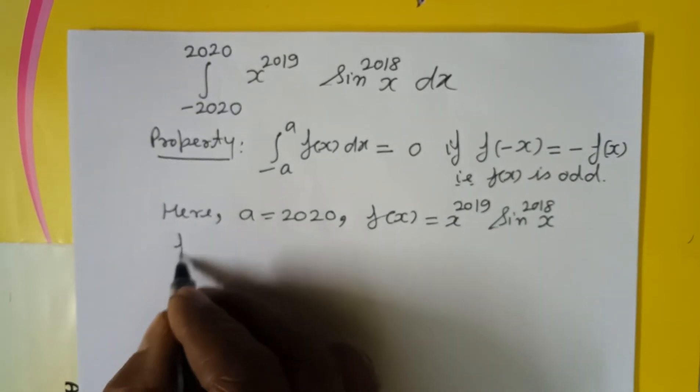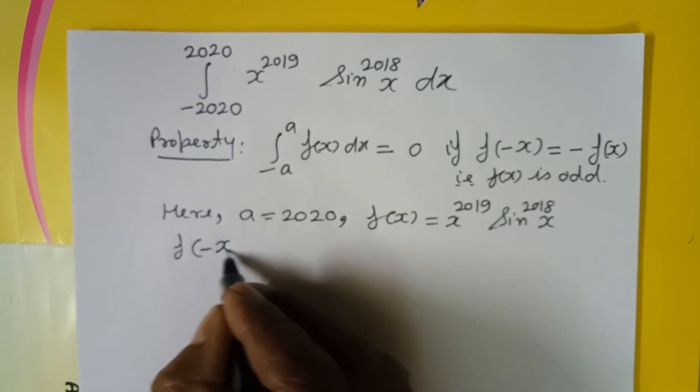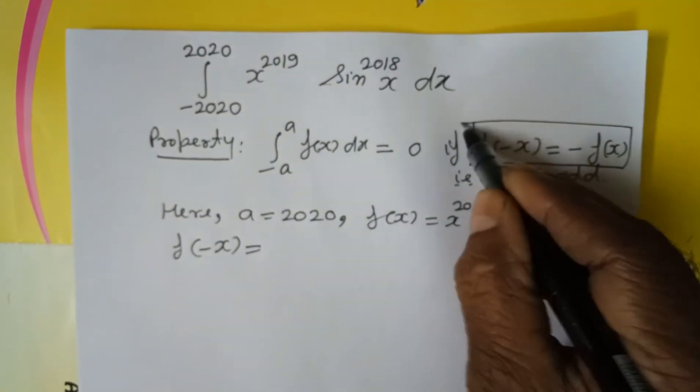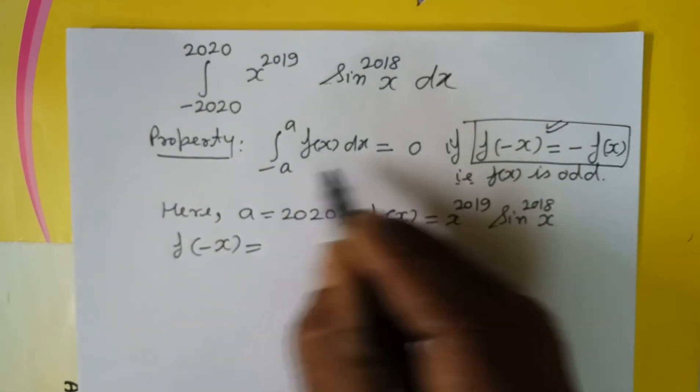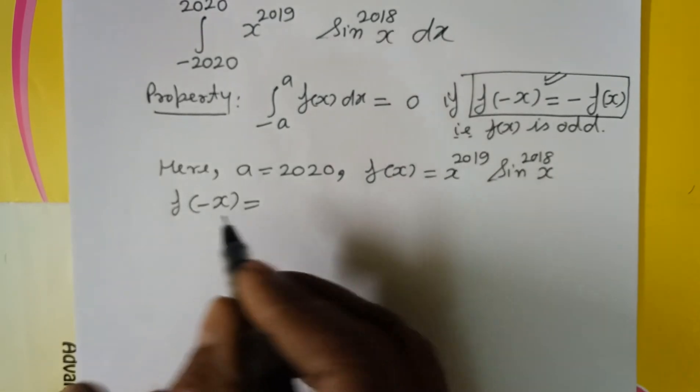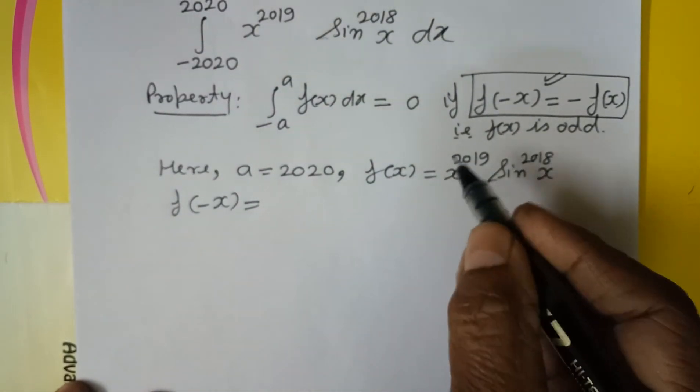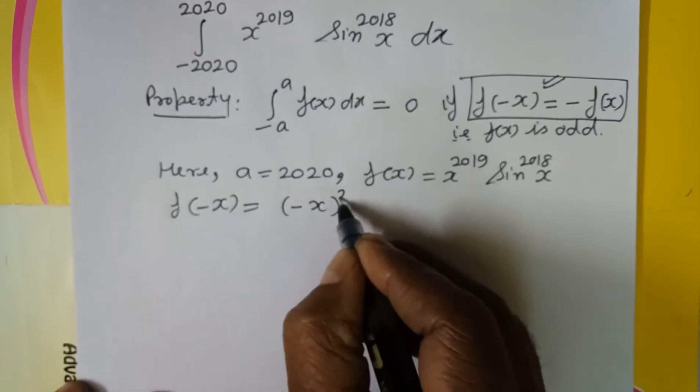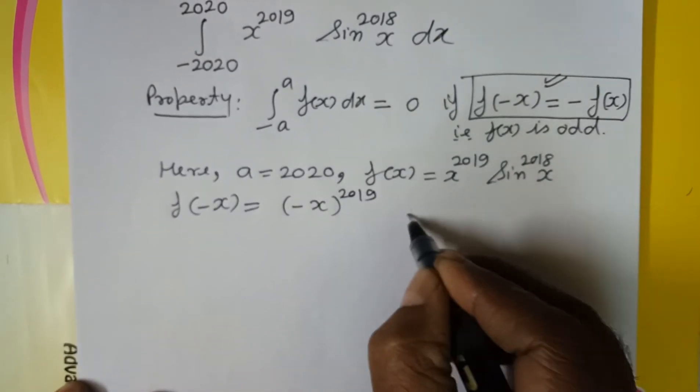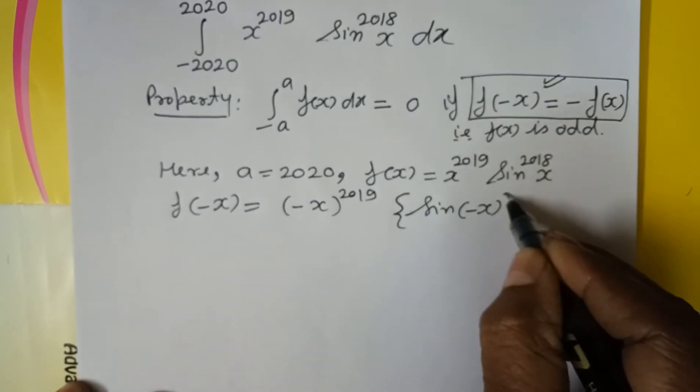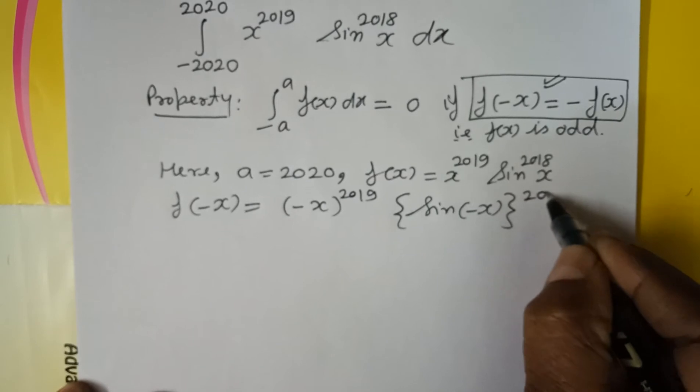Here we test f of minus x. If f of minus x comes out to be minus f(x), then the integral will vanish and the integral value will be 0. So f of minus x equals minus x to the power 2019 and sin of minus x to the power 2018.